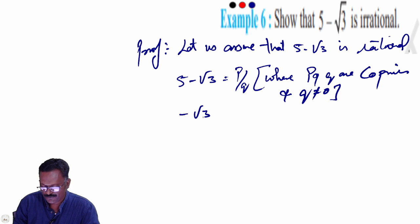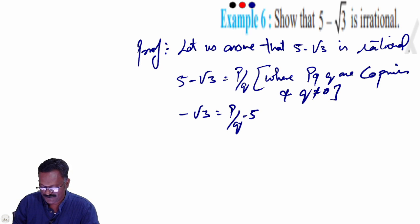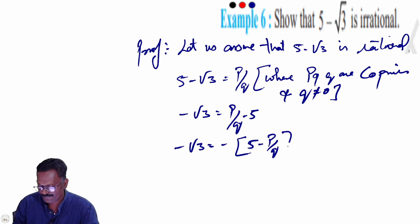Minus root 3 is equal to P by Q minus 5. So, minus root 3 is equal to minus of 5 minus P by Q.